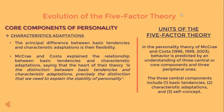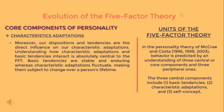The principal difference between basic tendencies and characteristic adaptations is their flexibility. McCrae and Costa explain that the heart of their theory is this distinction — precisely what we need to explain the stability of personality. Our dispositions and tendencies are the direct influence on our characteristic adaptations. Basic tendencies are stable and enduring, whereas characteristic adaptations fluctuate, making them subject to change over a person's lifetime.